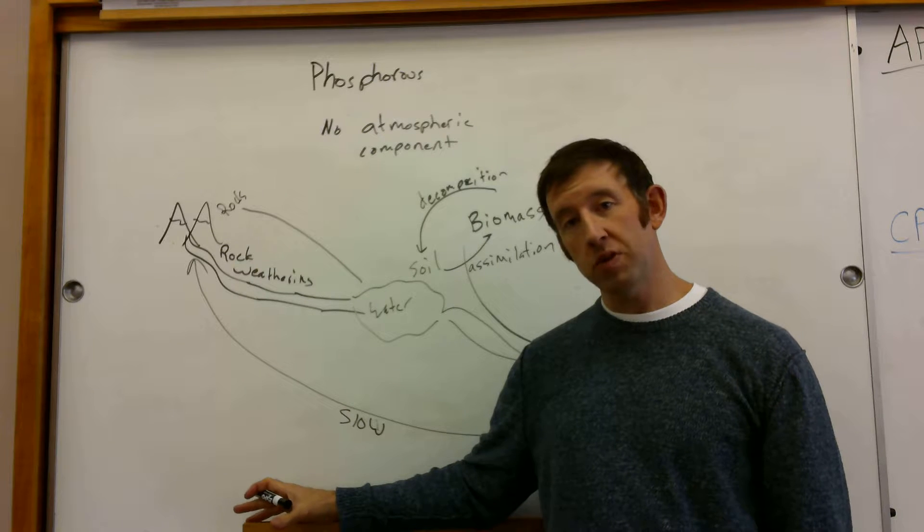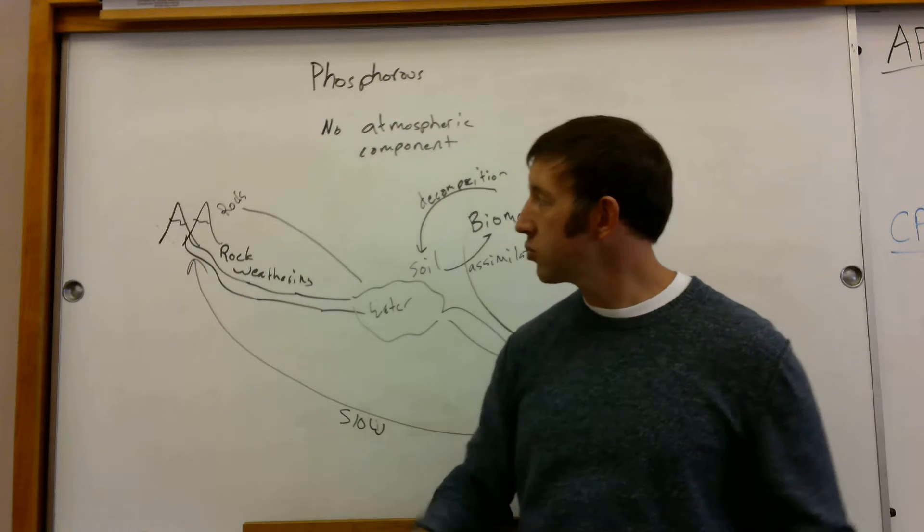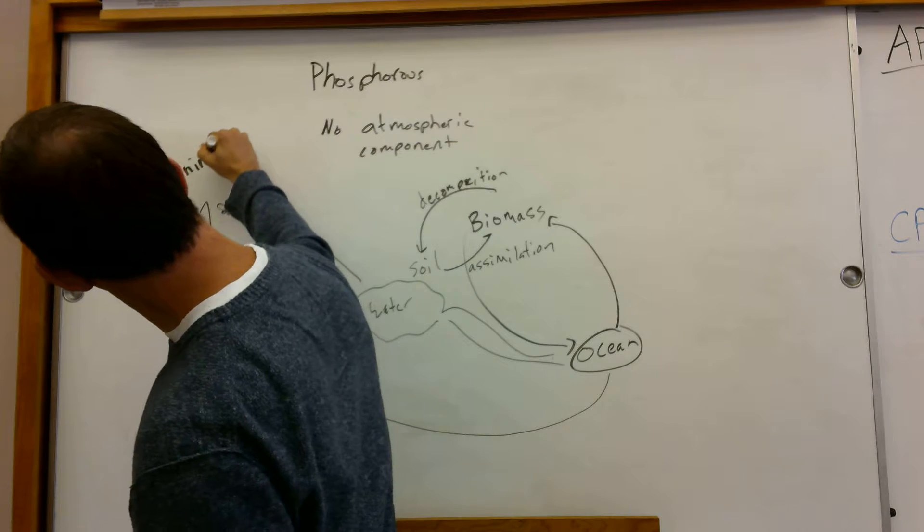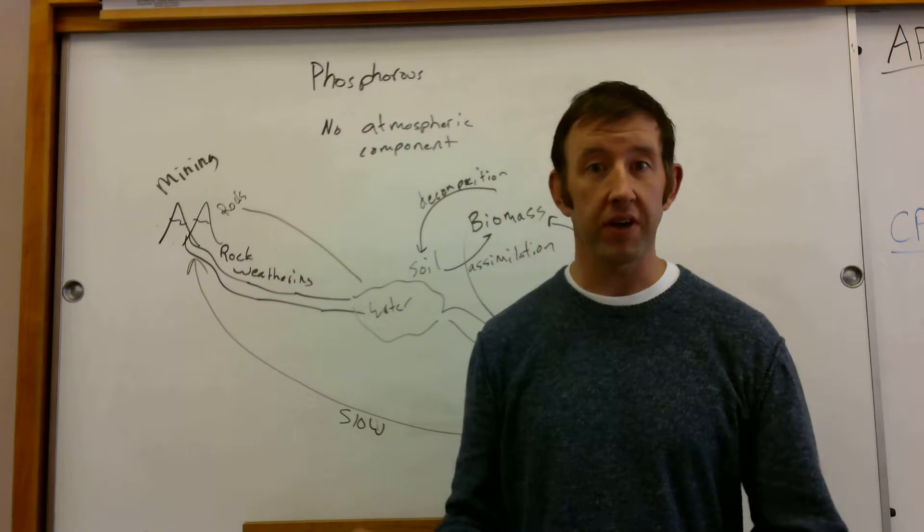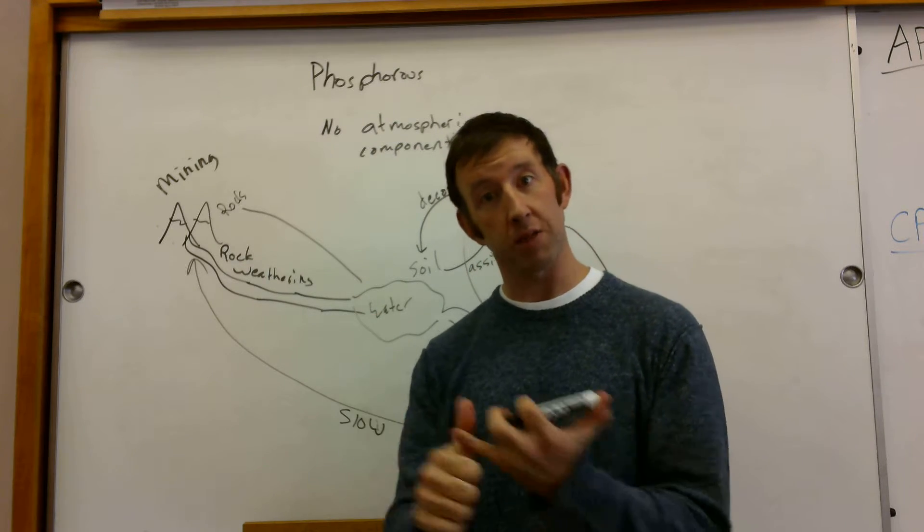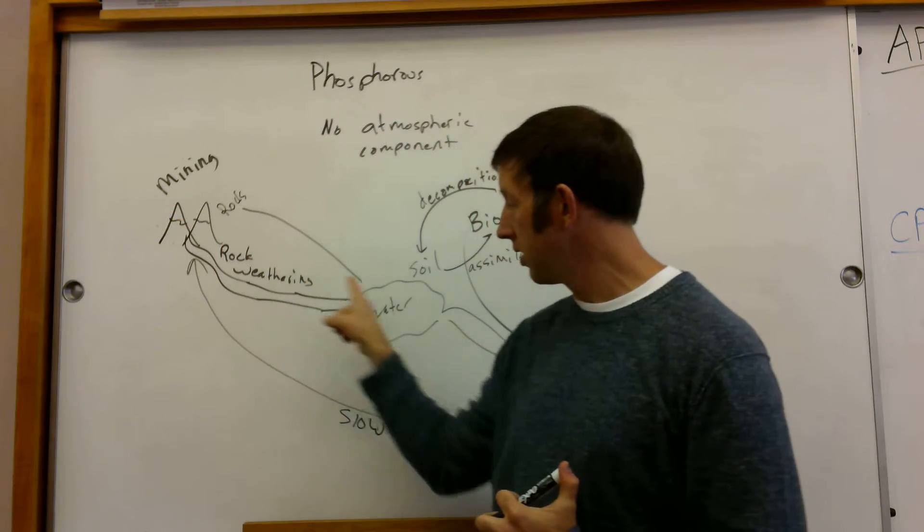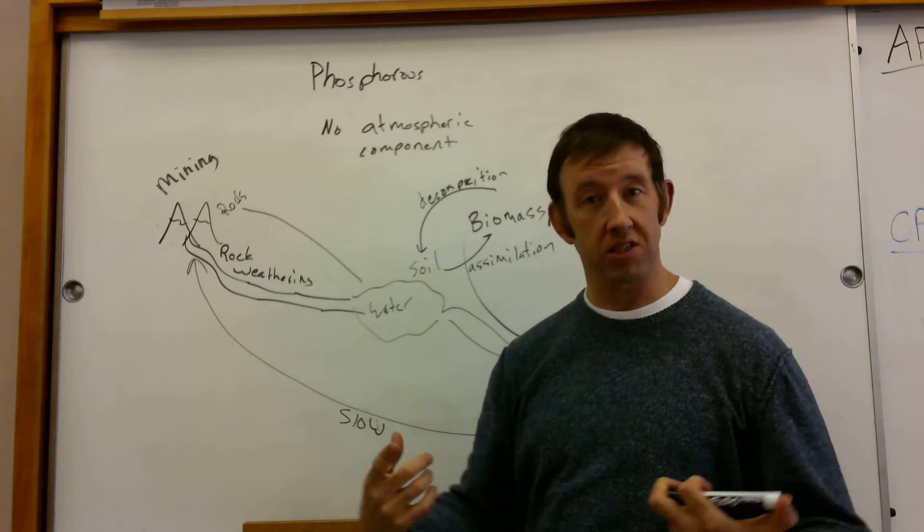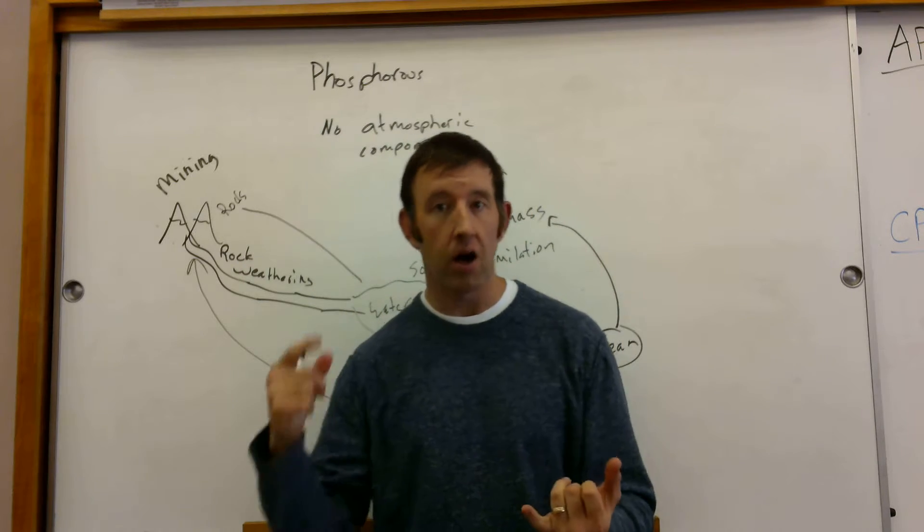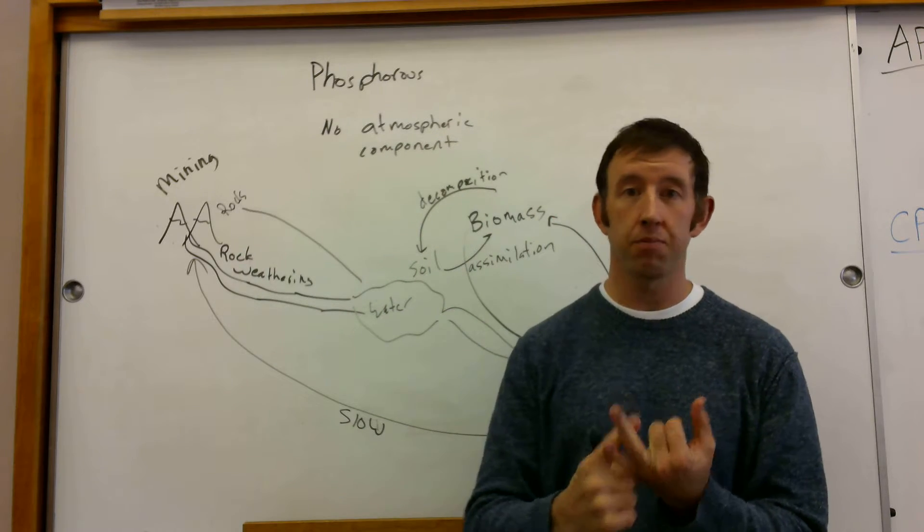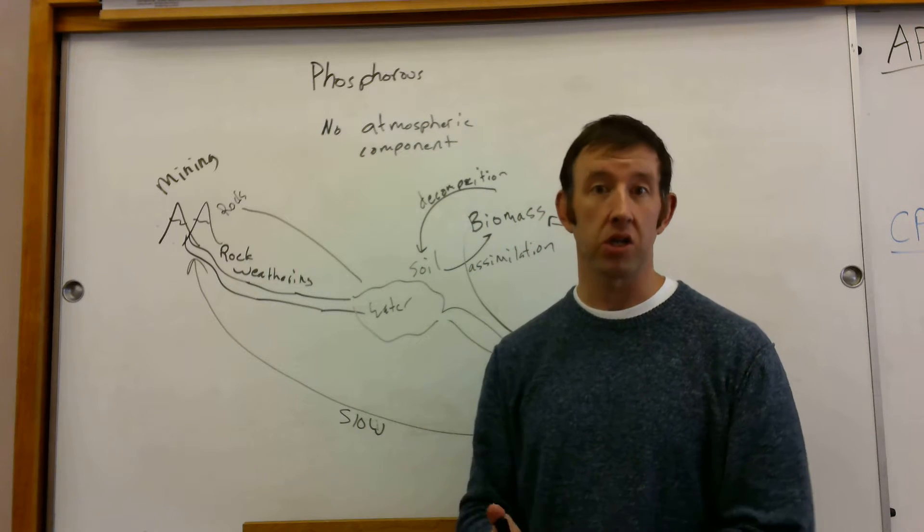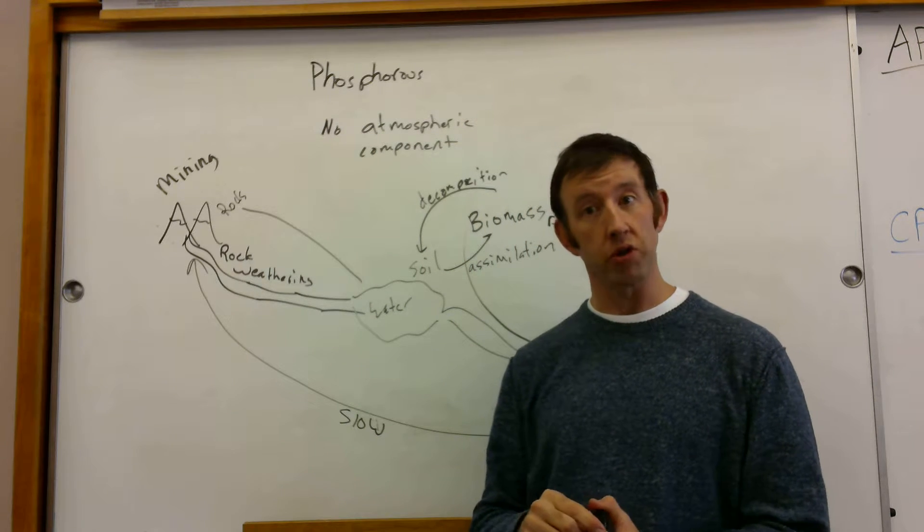Now one of the things humans have done is we mine phosphate-containing minerals so that we can use the phosphorus to kind of speed up this process to have greater access to phosphorus so we can put that in with our nitrogen fertilizers. So we have ammonium nitrate as one of the primary components, but we also add some phosphates to that fertilizer. This is another important limiting nutrient.